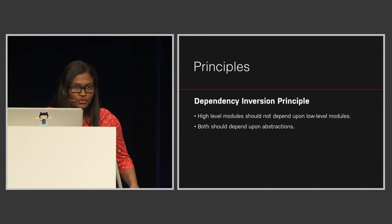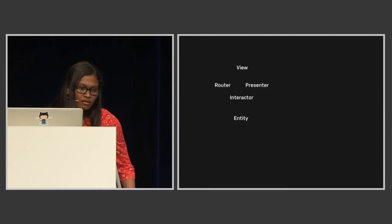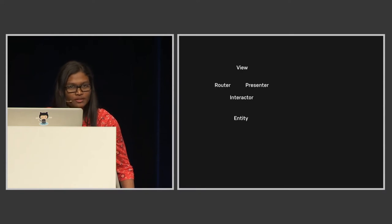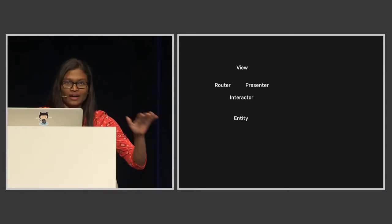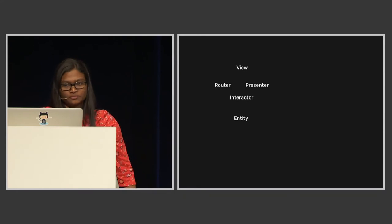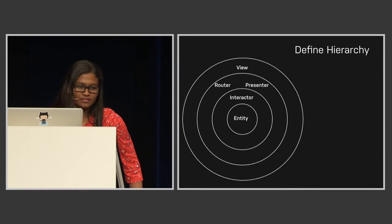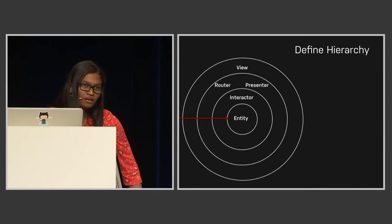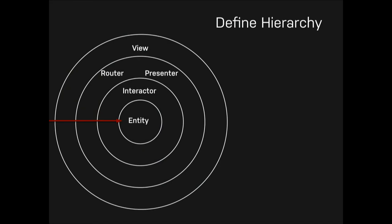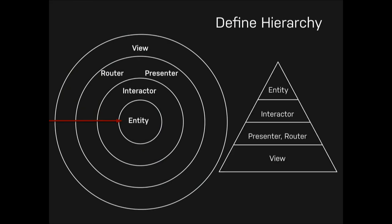Let's apply these rules to our architecture. We need to define some hierarchy so that we know which are the higher-level modules and which are the lower-level modules. We draw concentric circles - the further inner we go, the higher the module becomes. Entity and interactor compose the higher-level modules, and the other parts - presenter, router, and view - are the lower-level modules because they deal with the details.